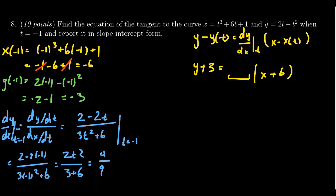And so that is then the slope of this thing we're going to put in there. So we end up with 4 ninths. We do need to put this into slope intercept form. So I'm going to distribute that 4 ninths there. So we get y plus 3 is equal to 4 ninths x plus 4 ninths times 6.